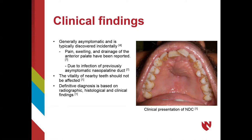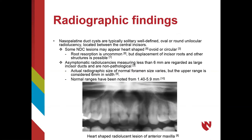Clinical findings may not be the most definitive means of diagnosing a nasal palatine duct cyst, but there are some characteristic radiographic features that help in the diagnosis of an NDC. The NDC itself can take the shape of an oval, circle, or can even be heart-shaped, like the radiolucency shown on the pantomograph below. The nasal palatine duct cyst can cause root displacement and may also cause displacement of other surrounding structures; however, it rarely causes root resorption.